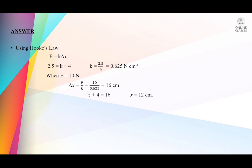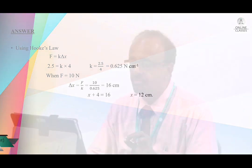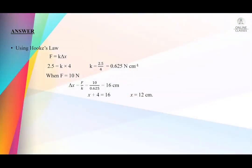I am going to use Hooke's law: F = kΔx. First, we apply F = kΔx for the given force of 2.5 N and extension of 4 cm. I am not going to convert centimeters to meters because there is no need — we can work without converting. So k will be 0.625 Newton per centimeter.